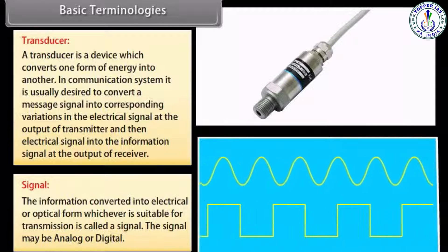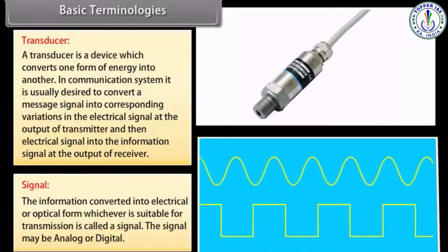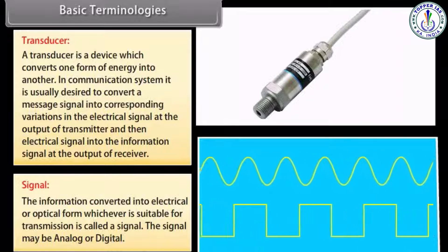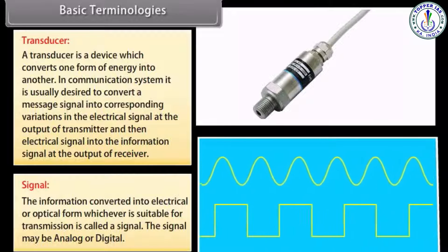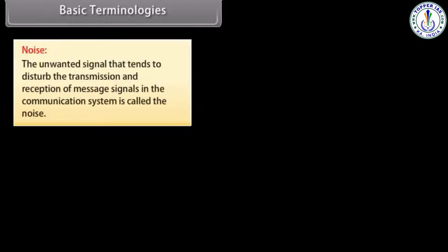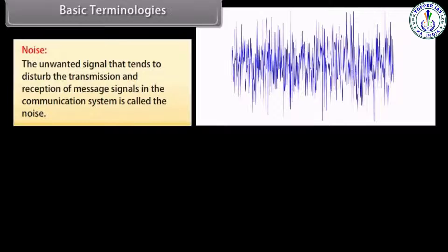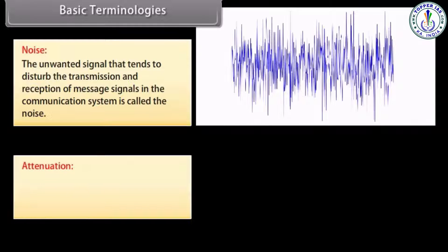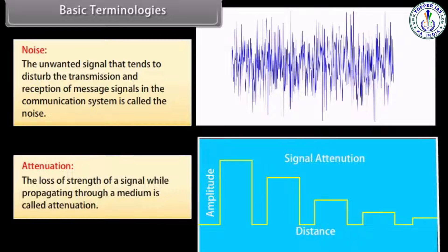Signal: the information converted into electrical or optical form, whichever is suitable for transmission, is called a signal. The signal may be analog or digital. Noise: the unwanted signal that tends to disturb the transmission and reception of message signals in the communication system is called noise. Attenuation: the loss of strength of a signal while propagating through a medium is called attenuation.